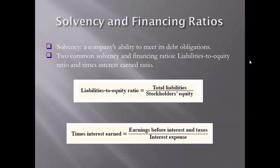Financial leverage is the amount of borrowing, or liabilities. Favorable financial leverage means a company is earning a return on borrowed funds that exceeds the cost of borrowing the funds. The second solvency and financing ratio we will consider is the times interest earned ratio, which indicates the margin of safety provided to creditors. It is calculated by dividing earnings before interest and taxes by interest expense.